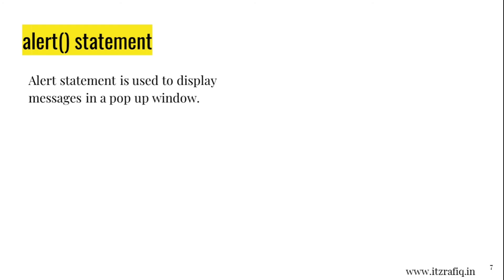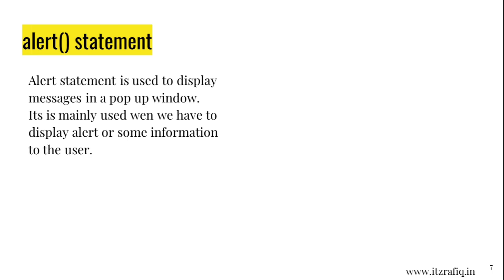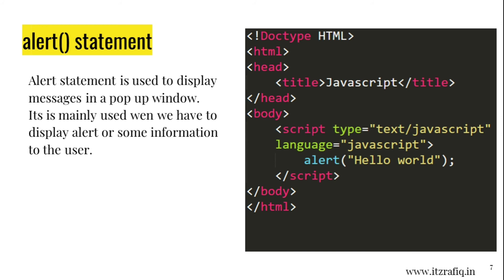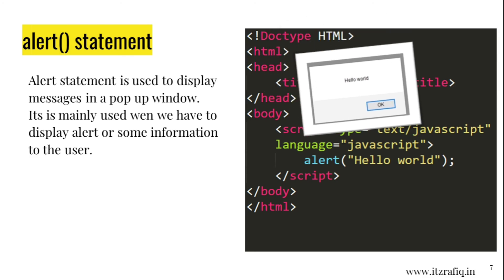Alert statement: The alert statement is used to display a pop-up window. It is mainly used when we have to display an alert or some information to the user. The syntax is: script type='text/javascript' language='javascript', then alert('Hello World'); and then close the script tag. The output will display in a small pop-up window.